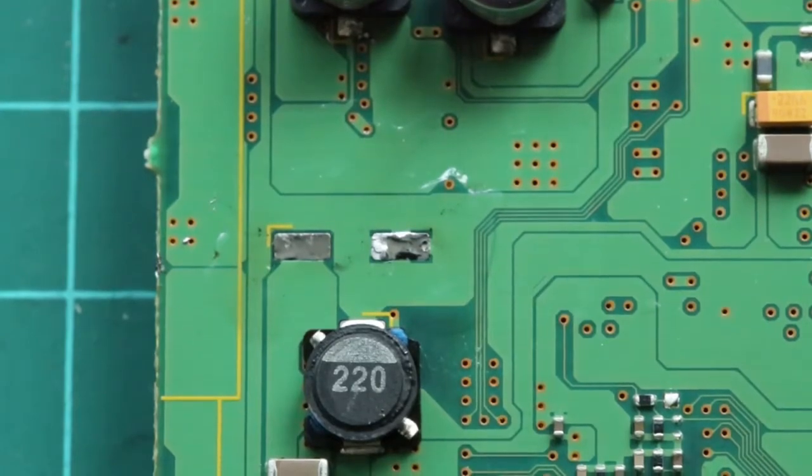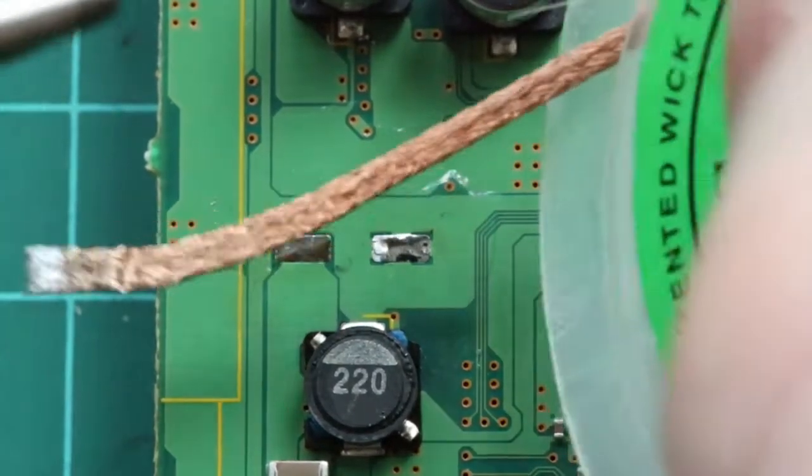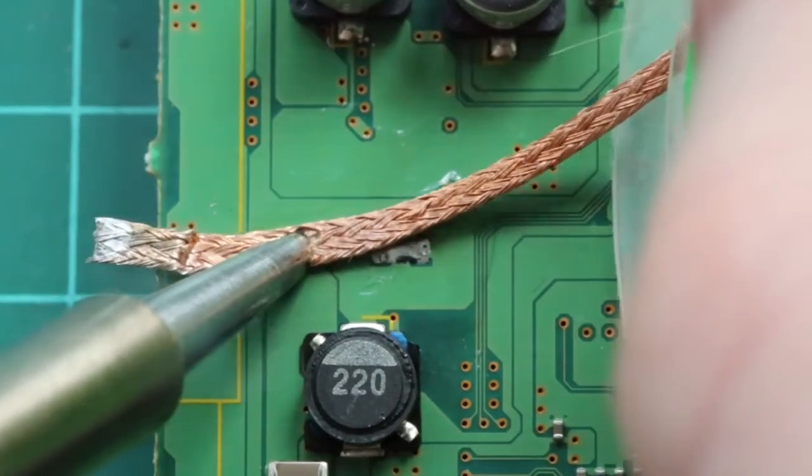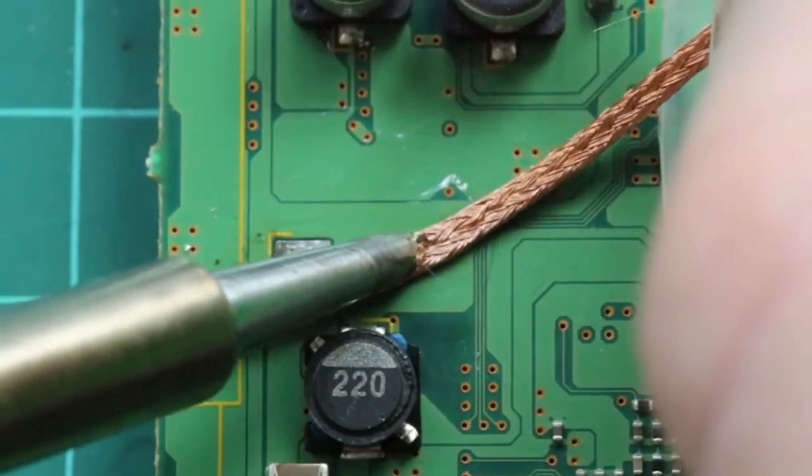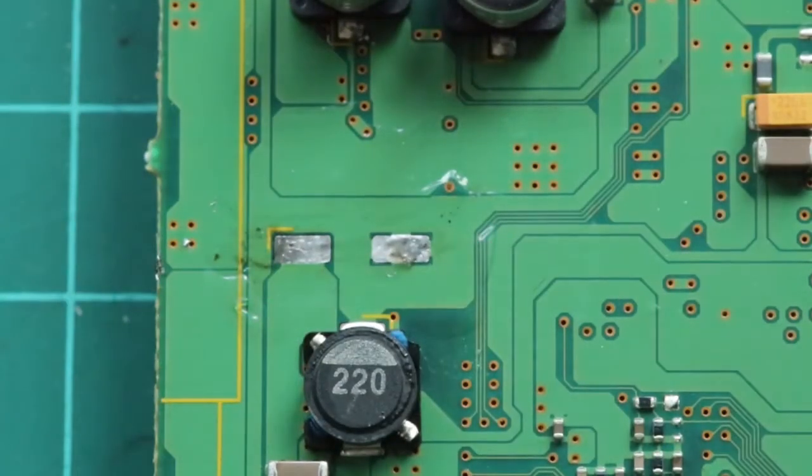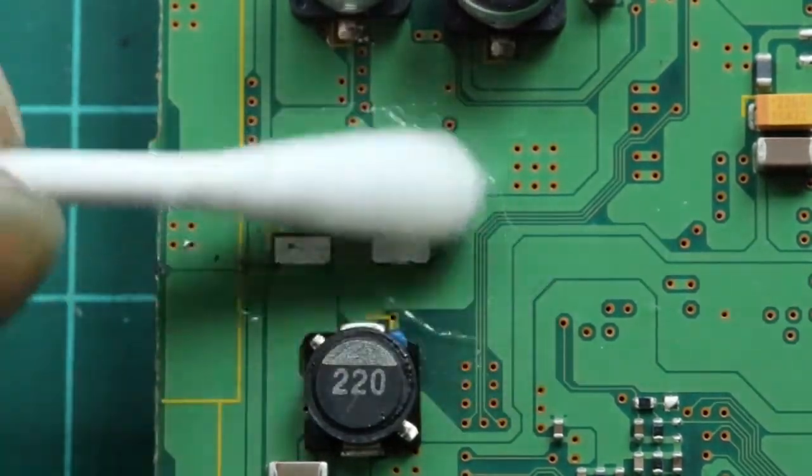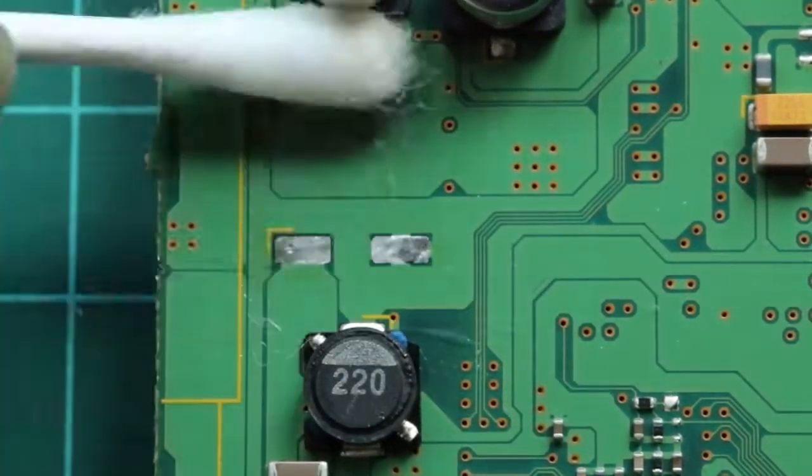Just a quick clean up of the two pads with some solder braid. And then a quick clean up of the flux with some isopropyl alcohol.